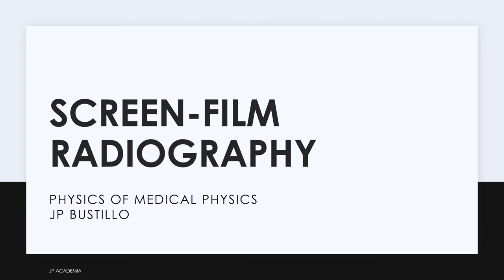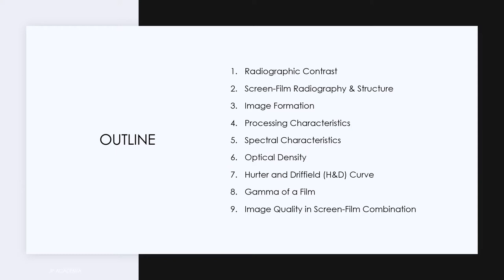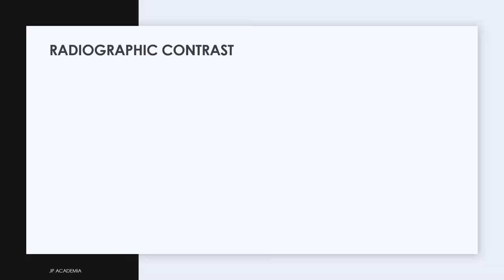In this lecture, we will talk about the factors, components, and processes important in screen-film radiography. There are several factors affecting the contrast during x-ray image formation. This involves the transition of one type of contrast to another at two stages in the image formation process.